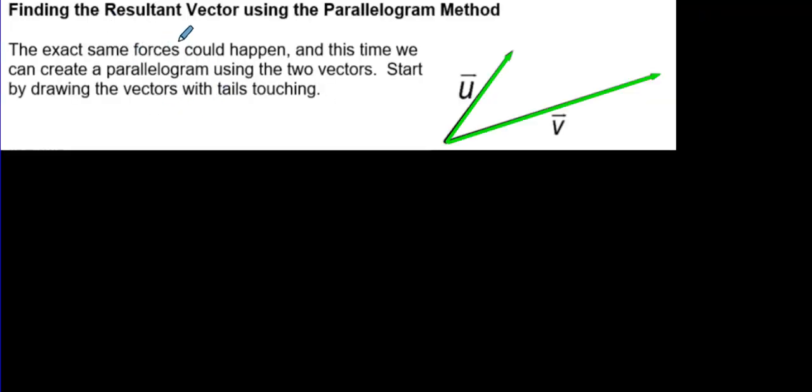So the other option is you can add up vectors using the parallelogram method. And I'm going to take these two vectors here and put them right here. And instead of head-to-tail, it's basically tail-to-tail. So you put them together right there.